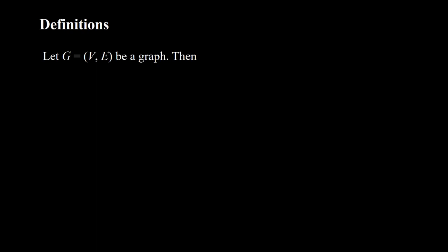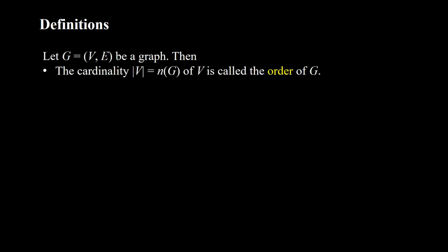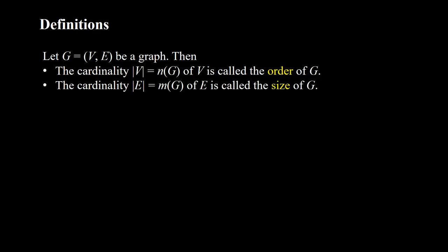Definitions. Let G equals to the pair V, E be a graph. Then the cardinality of V, which is the same as n(G) of V, is called the order of G. The cardinality of E, which is also the same as m(G) of E, is called the size of G.